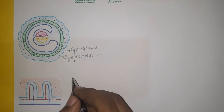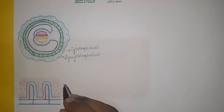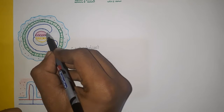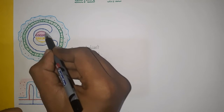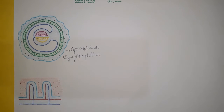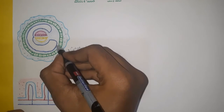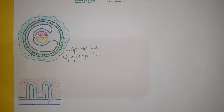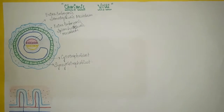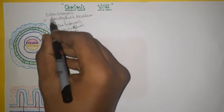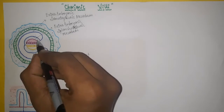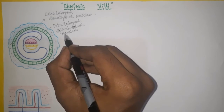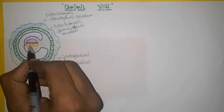The extra-embryonic mesoderm is divided into two parts. The extra-embryonic mesoderm which surrounds the yolk sac portion is called splanchnopleuric mesoderm, and the extra-embryonic mesoderm which underlies the cytotrophoblast is called somatopleuric mesoderm. Remember, the intra-embryonic mesoderm is separate from both of these.